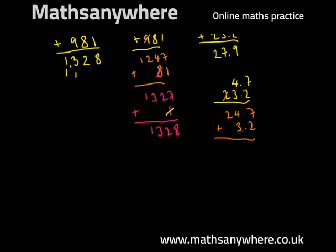24.7 plus 3 gives us 27.7. We need to remember about our 0.2. 27.7 plus 0.2, you'd be doing this in your head, is 27.9, which is the same answer as we got when we used our traditional paper technique.